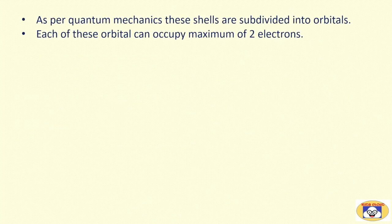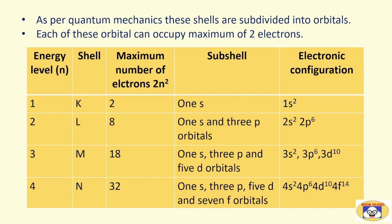As per quantum mechanics, these shells are subdivided into orbitals. Each of these orbitals can occupy maximum of 2 electrons. This table is showing the electronic configuration by taking into consideration shells and subshells for K, L, M and N shells respectively. First energy level K contains 1s orbital. Second energy level L contains 1s and 3p orbitals. Third energy level M contains 1s, 3p and along with that 5d orbitals. While the fourth one N contains 1s, 3p, 5d and 7f orbitals. So detailed electronic configuration considering shell and subshell is shown in the last column.